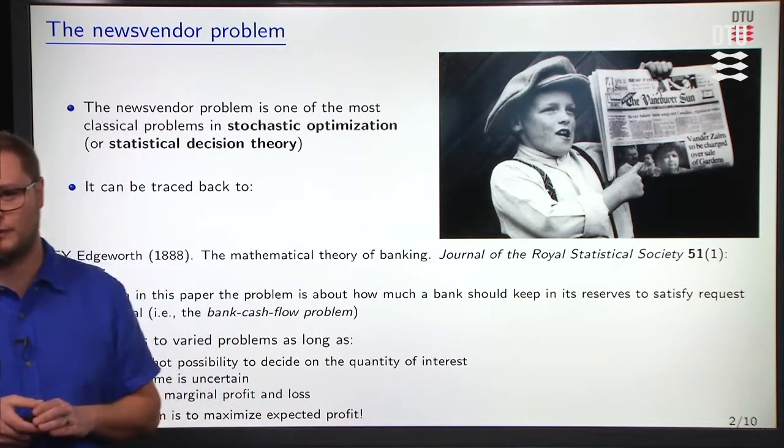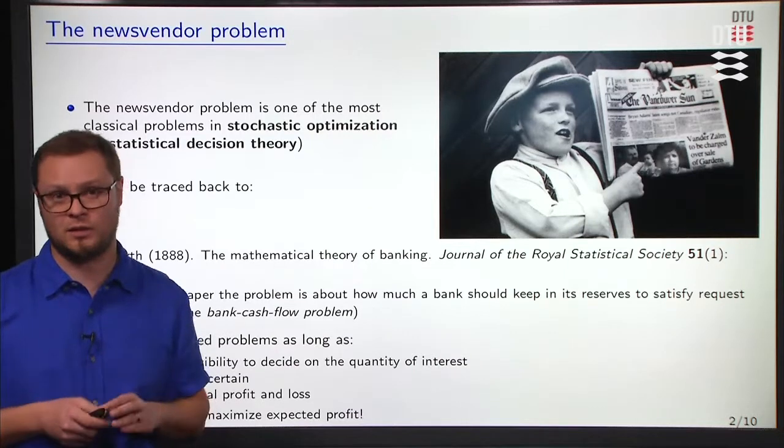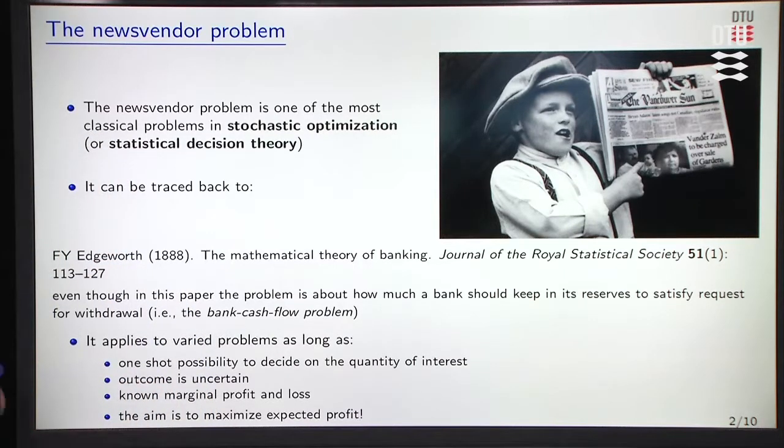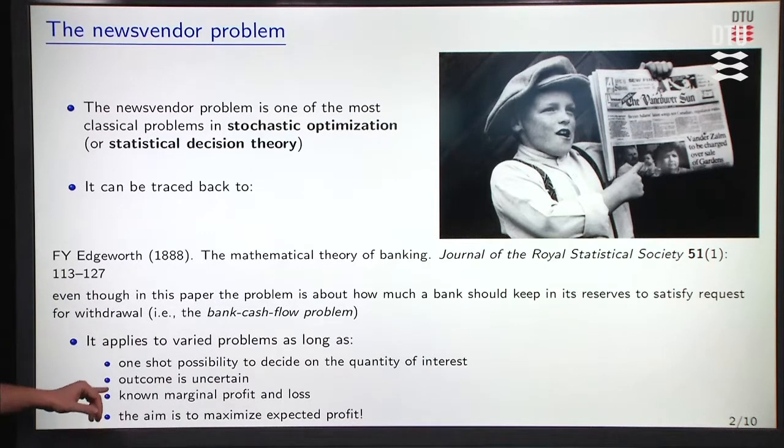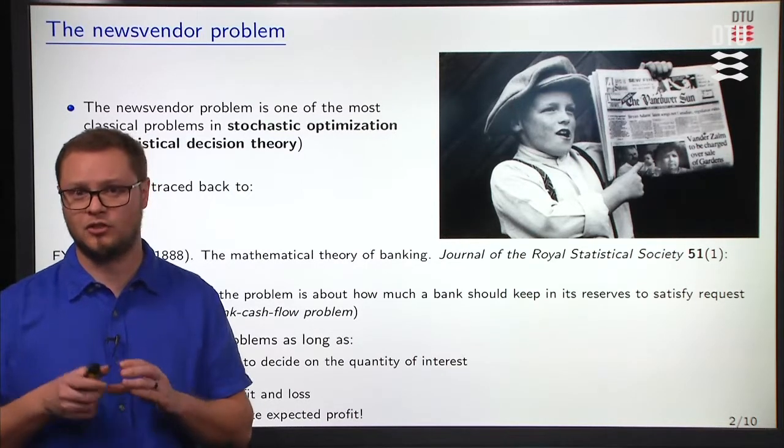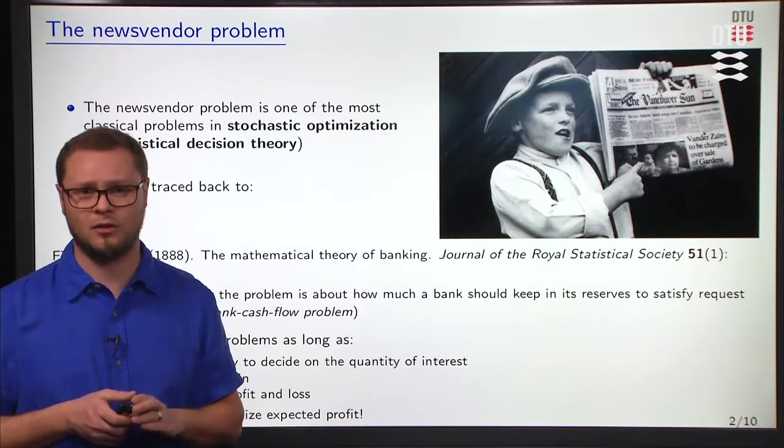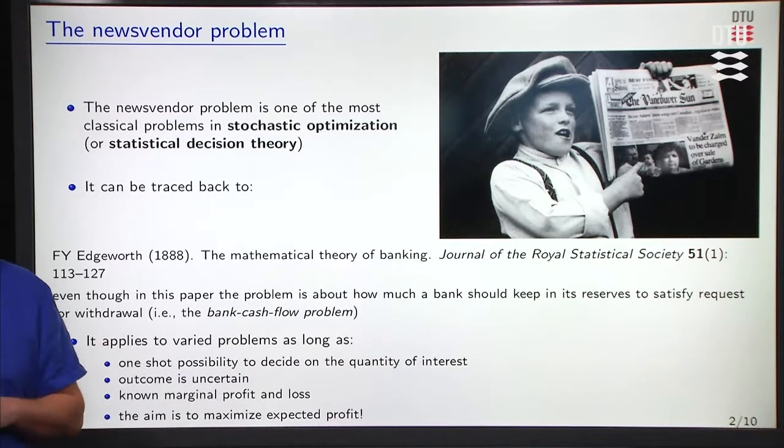This problem has some very specific features that we can find in many other stochastic optimization problems. So we refer to, as newsvendor problem, any of these problems with the same characteristics. These characteristics are the one-shot possibility to decide on the quantity of interest. So here, it's the number of newspapers to buy from the warehouse in the morning. The outcome is uncertain. Here, the demand is uncertain. How many newspapers are we going to sell during the day? We have known marginal profit and loss. In view of the numbers I gave, we know he can make a profit of $2 per unit for each and every unit sold, and he will make a loss of $1 per unit for each and every unit unsold.